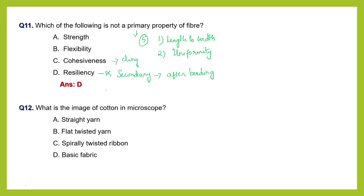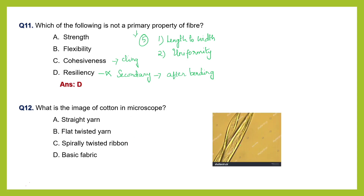Question number 12: what is the image of cotton under a microscope? Straight yarn, flat twisted yarn, spirally twisted ribbon, or basic fabric? Each fiber can be studied under a microscope. When we see cotton under a microscope, we can see a spirally twisted ribbon-like structure - you can see it in the picture. For wool, you see scaly structures; for silk, a thin rod-like structure. The answer is C: spirally twisted ribbon.